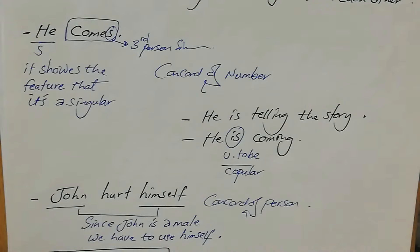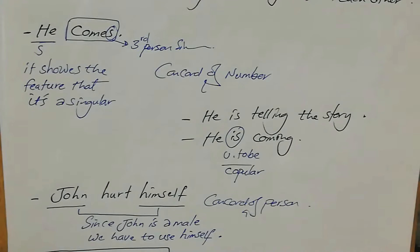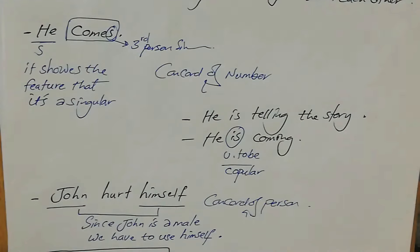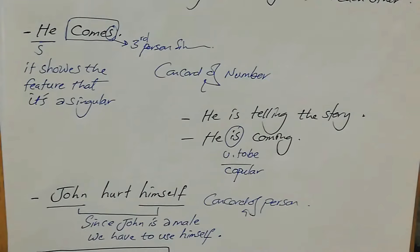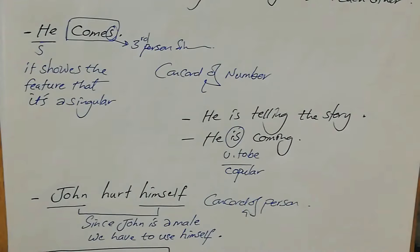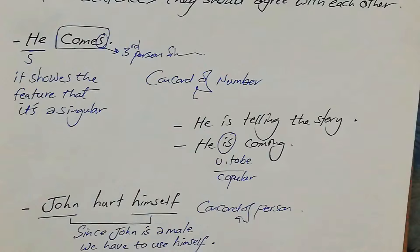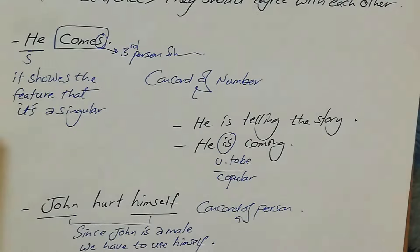Let's start with this example: 'He comes.' Here, 'he' is the subject — syntactically, grammatically, it is the subject. It shows the feature that it is singular, a singular subject. So it should agree with the verb. The 's' on 'comes' is the third person singular marker. This is evidence that this verb is in the simple present tense. So there is agreement between the subject and the verb. Since 'he' is singular, the verb must take an 's'. So this is a concord of number.